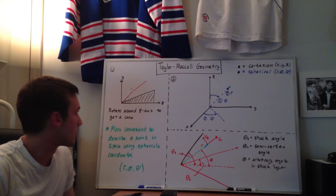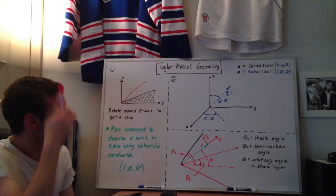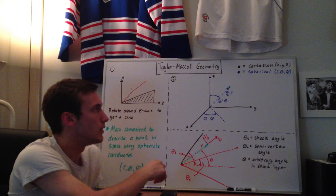So it's more convenient to describe a point in this space using spherical coordinates, which instead of x, y, z are going to be r, theta, phi. So I have a Cartesian coordinate system x, y, z in black, and then the spherical coordinate system r, theta, phi in blue.